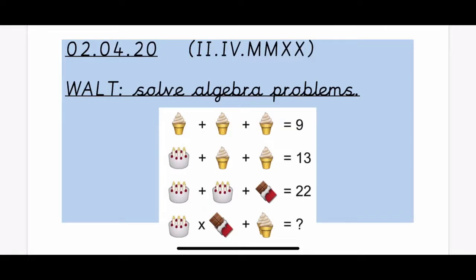And then use those answers to help you solve the bottom row. Look really carefully at the number of the emojis and also the operations on there as well.